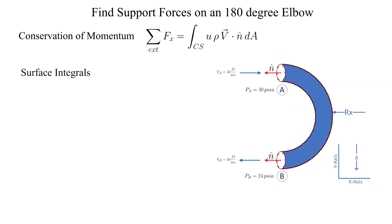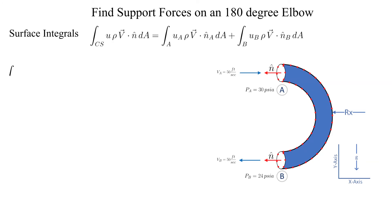Now let's work on the surface integral. We break it down into integration over the two surfaces A and B. The surface integration over A is shown. The x component of the velocity vector is equal to positive VA.